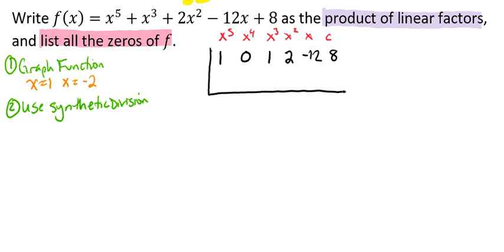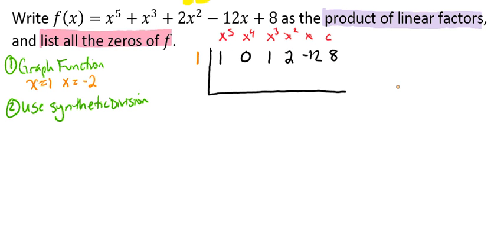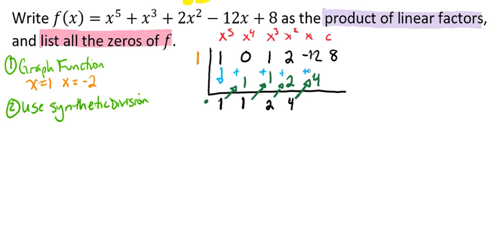Let's try x equals 1 first. Notice on our graph that 1 simply touched but didn't cross, so x equals 1 is going to be a repeating zero. Bringing down our 1 and doing the synthetic division: 1, 1, 2, 4, negative 8, and we get a remainder of 0. So we confirm that x equals 1 is a solution.